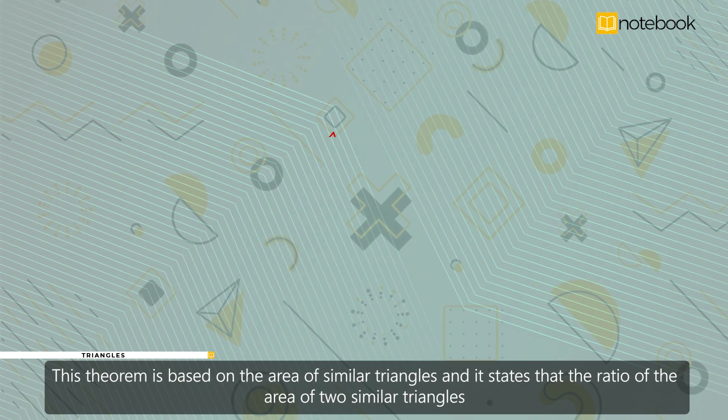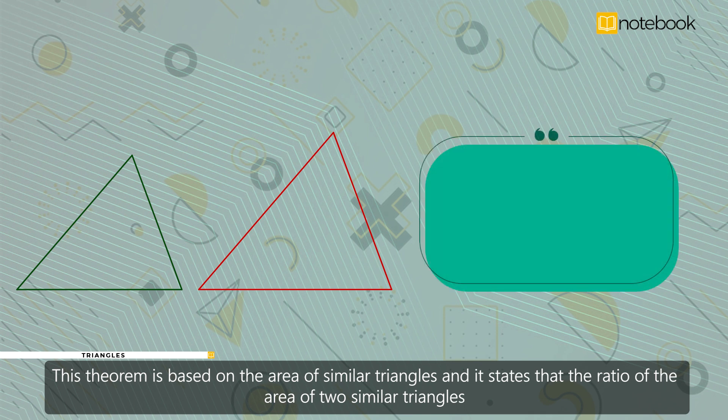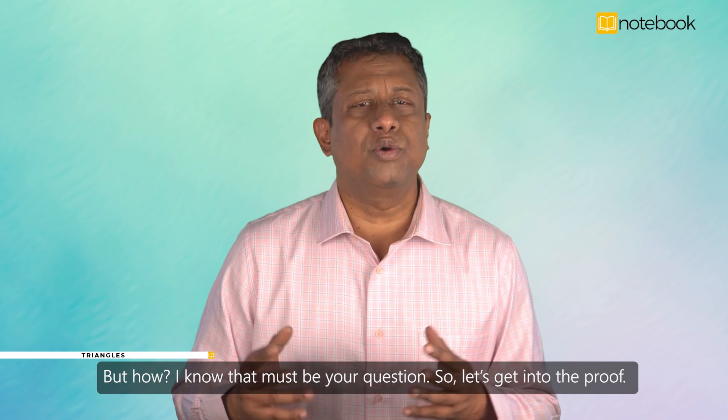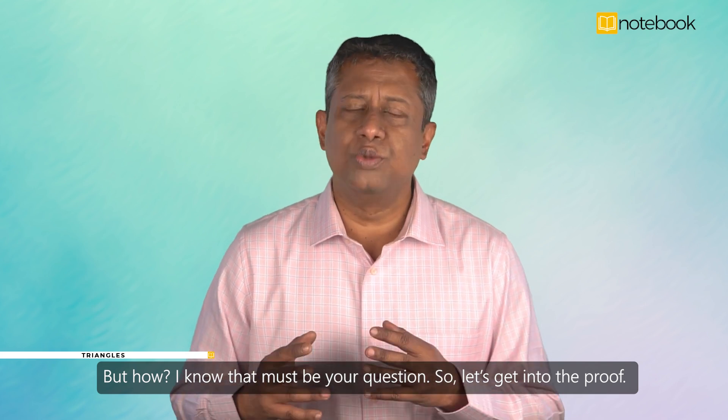This theorem is based on the area of similar triangles, and it states that the ratio of the area of two similar triangles is equal to the ratio of the squares of the corresponding sides. But how? I know that must be your question. So let's get into the proof.